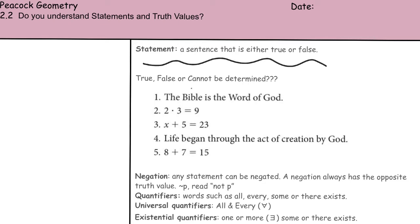A statement is a sentence that is either true or false. So we can look at these statements - true, false, or cannot be determined. The Bible is the word of God - true. Two times three is nine - false. X plus five equals 23. Well, if we look at this one, it's not a statement because we can't determine it to be true or false. We can solve this and then say X plus five equals 23 if X is equal to 18, but at this point, number three is not a statement.